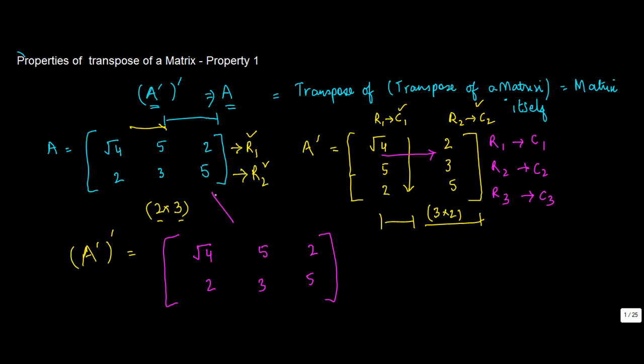Now if you compare these two, you will notice that this is root 4, 5, 2, 2, 3, 5. Or in other words, both these matrices are equal. So we say that A dash A dash is equal to A, which is the property T1 of transpose of the matrix.